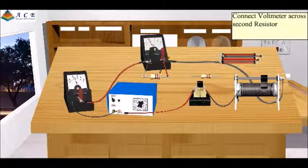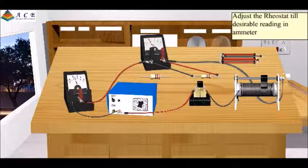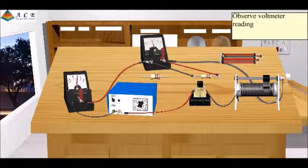Connect the voltmeter across the second resistor. Adjust the rheostat till the desirable reading in the ammeter. Observe the voltmeter reading.